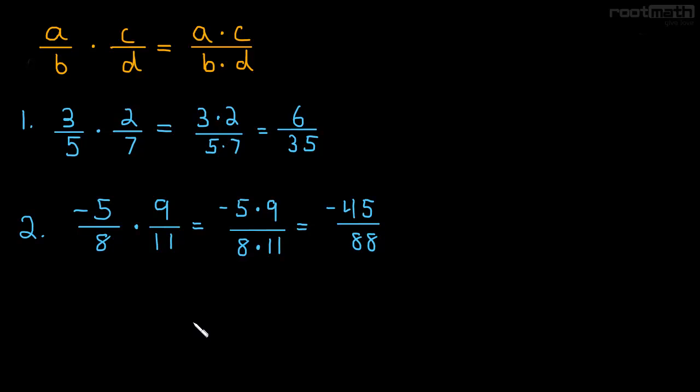Just to be thorough, why don't we do one more example, and then we'll talk about something different. How about 1 third times 40 over 41? Well, 1 times 40 is just 40 over 3 times 41. So this is 40 over 123.